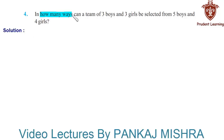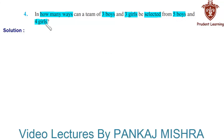In how many ways can a team of 3 boys and 3 girls be selected from 5 boys and 4 girls? In this problem, we have 5 boys and 4 girls and we have to select a team consisting of 3 boys and 3 girls. We have to find the number of ways in which 3 boys and 3 girls can be selected out of 5 boys and 4 girls.